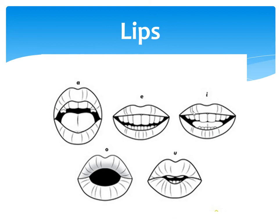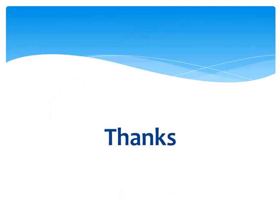Using flat lips we can produce sounds like /e/. Using rounded lips we can produce sounds like /o/. Using open lips we can produce sounds like /ah/. So the lips are also an organ of speech, and the different shapes of the lips determine different English sounds. That's it for the organs of speech — please subscribe for future videos, thank you very much.